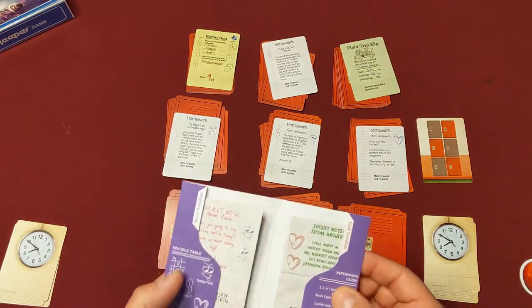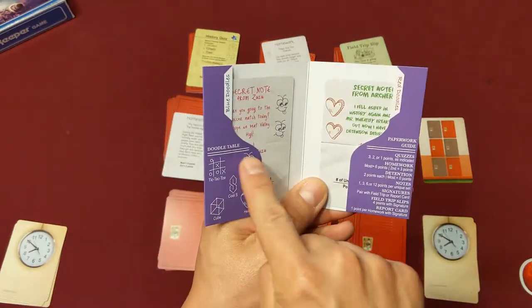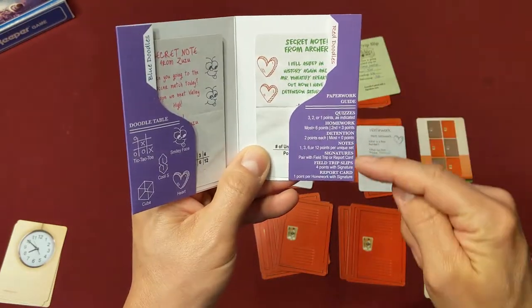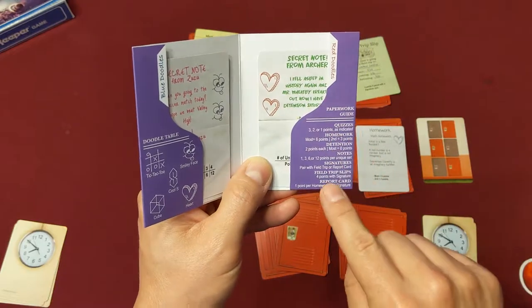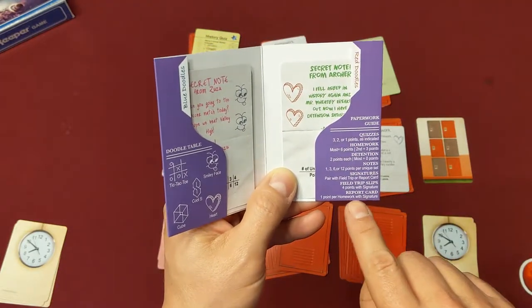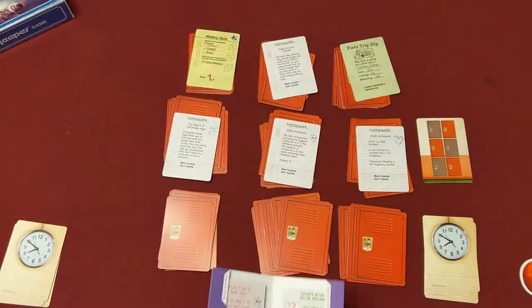And you add up your points. Like I said, scoring is pretty easy. You do the doodles first, and then you score based on this item over here. The one that can be a little tricky is the report card and the field trip notes. So let me show you how those score.